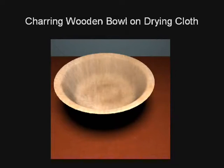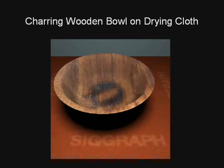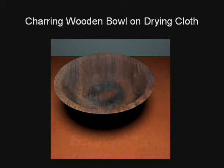In this example, with a burning wooden bowl and drying orange cloth, we use rate maps to create the appearance of the SIGGRAPH logo, which fades in and then fades out over time as the burning and drying are complete.